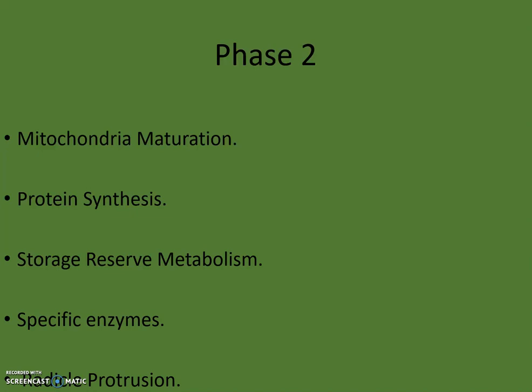The critical cellular activities needed for normal germination include: mitochondria maturation, protein synthesis, storage reserve metabolism, production of specific enzymes, and radicle protrusion. Regarding mitochondria maturation — mitochondria are present in dry seeds but must be rehydrated and the membranes within the mitochondria must become enzymatically active within hours of imbibition. The mitochondria then appear more normal and both respiration and ATP synthesis increase substantially. Although present in dry seeds, mitochondria are in a metabolically inactive stage; once rehydrated, the enzymes in the mitochondrial membrane become activated and start producing ATP and engaging in respiration.